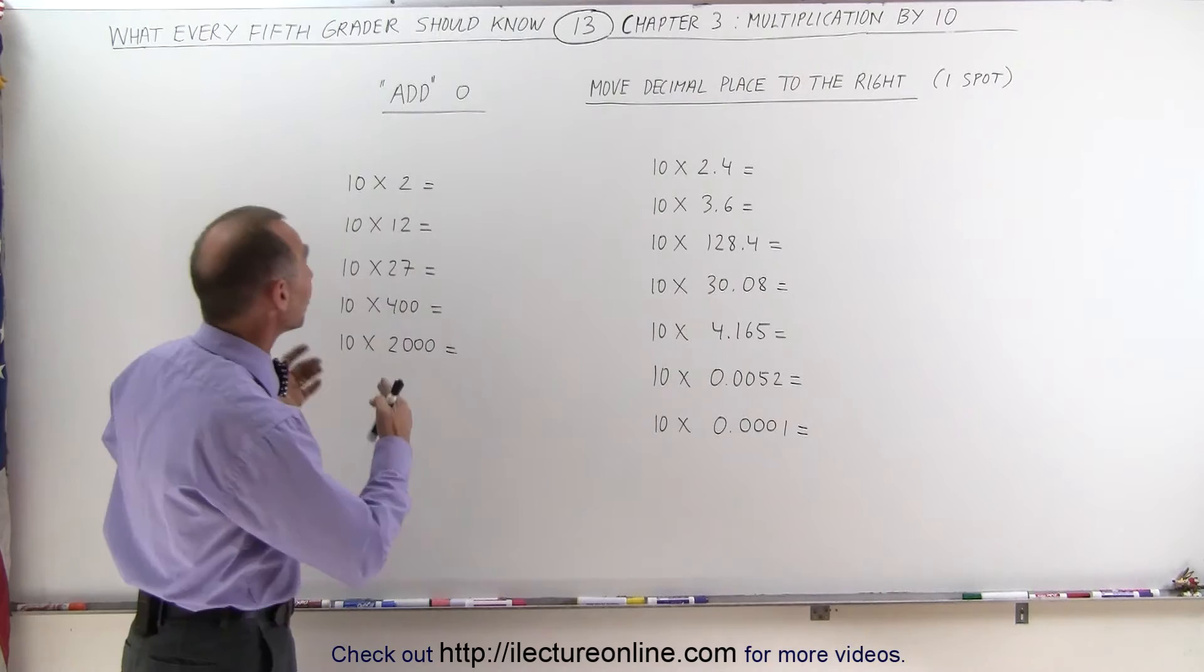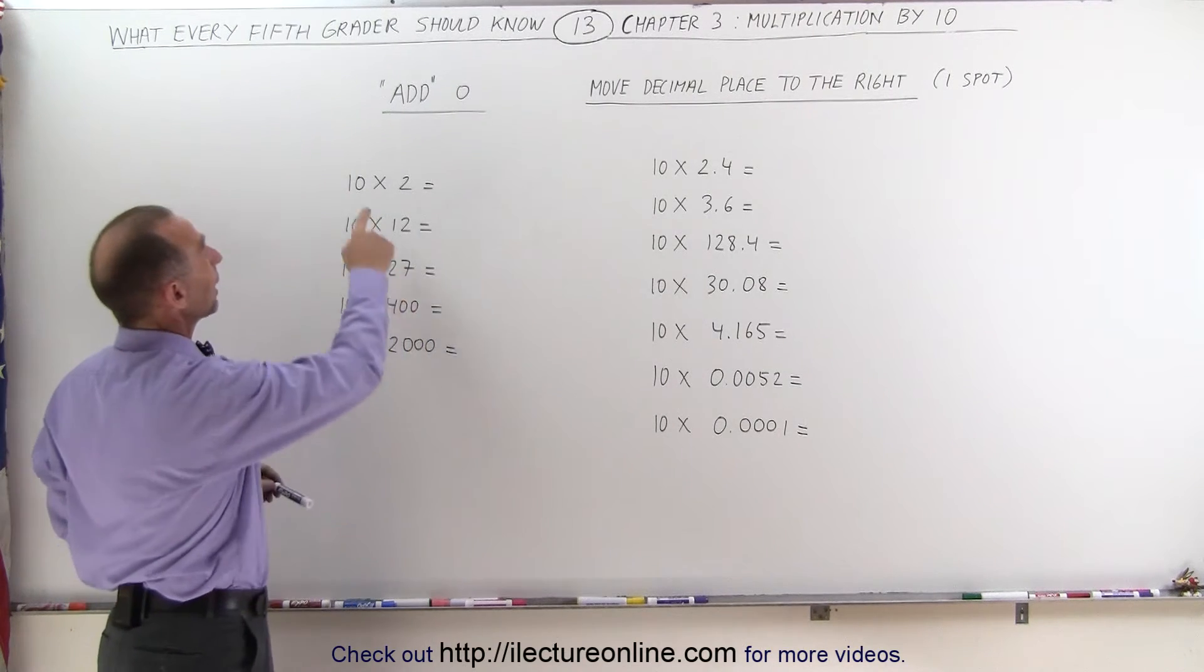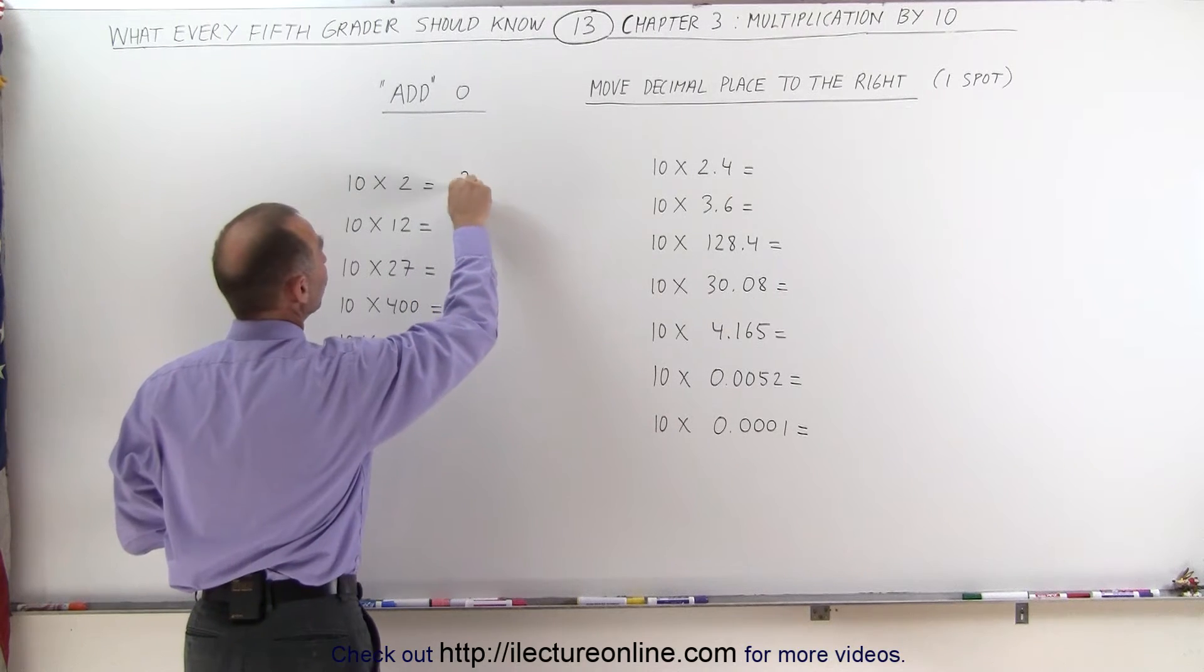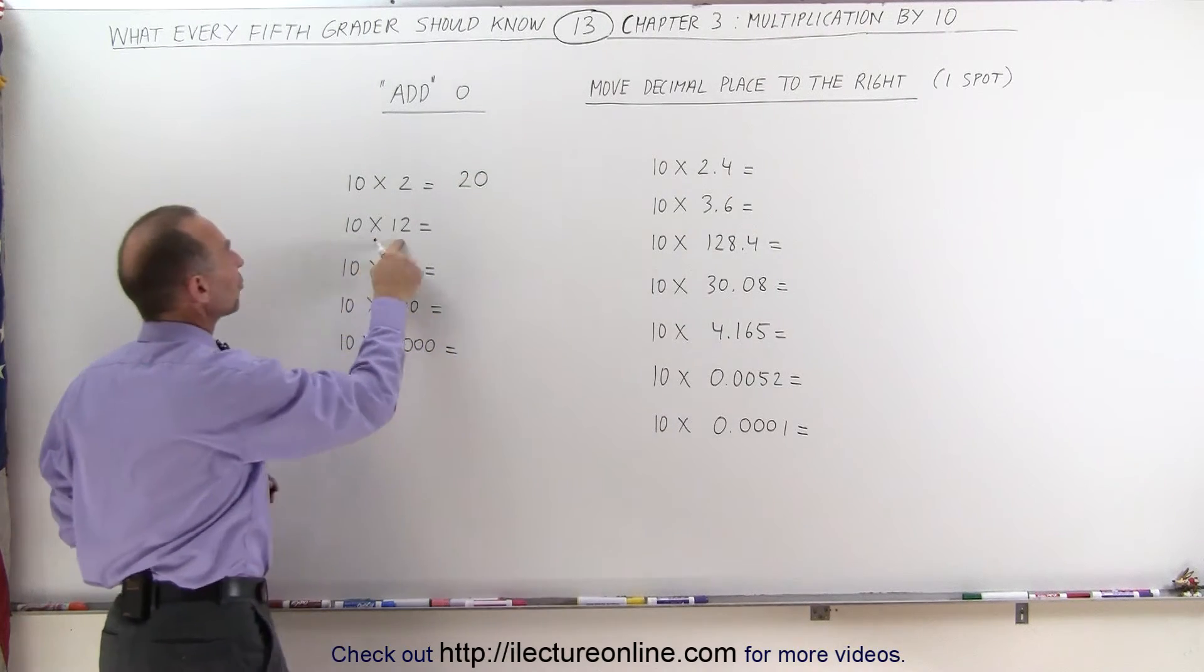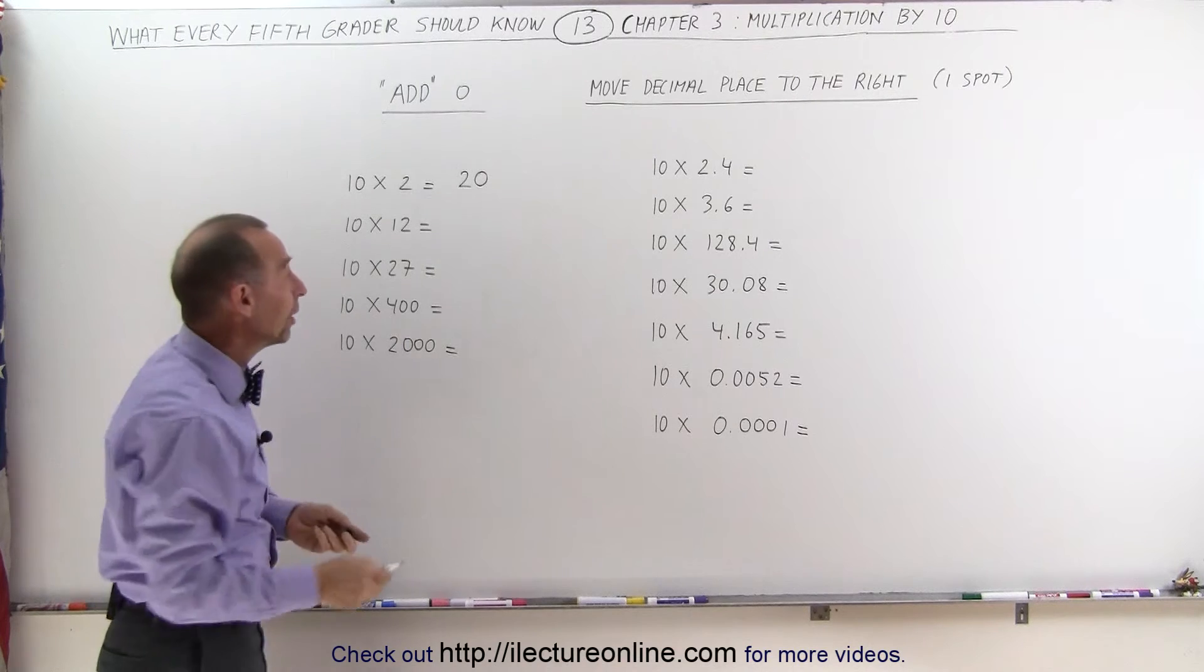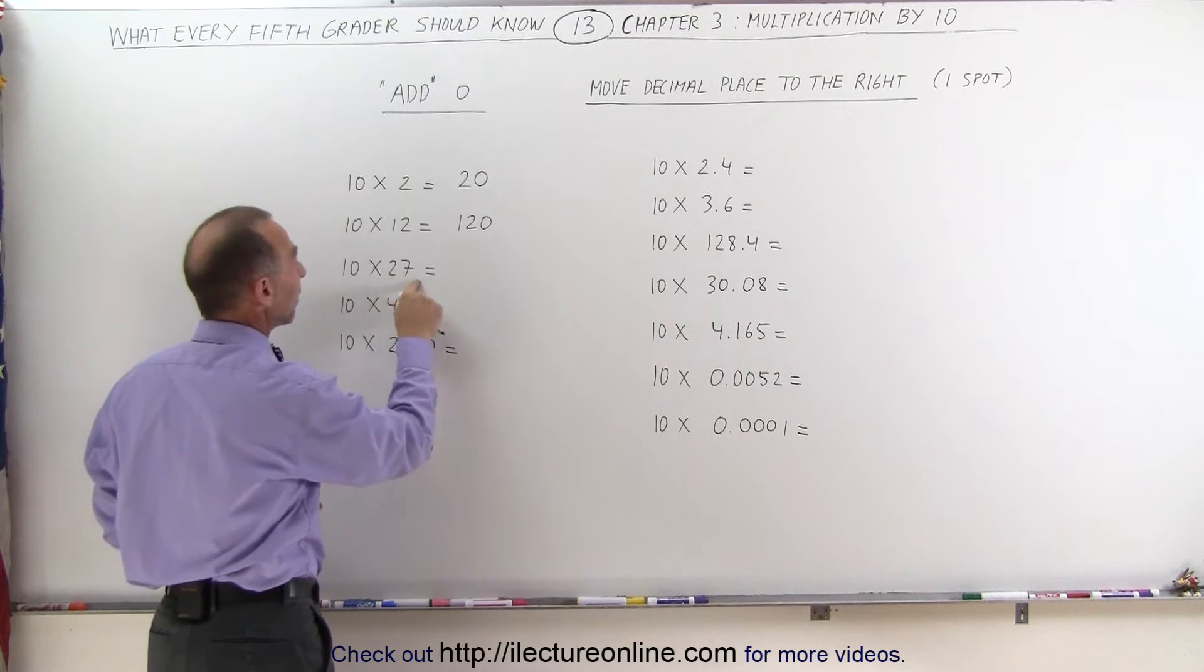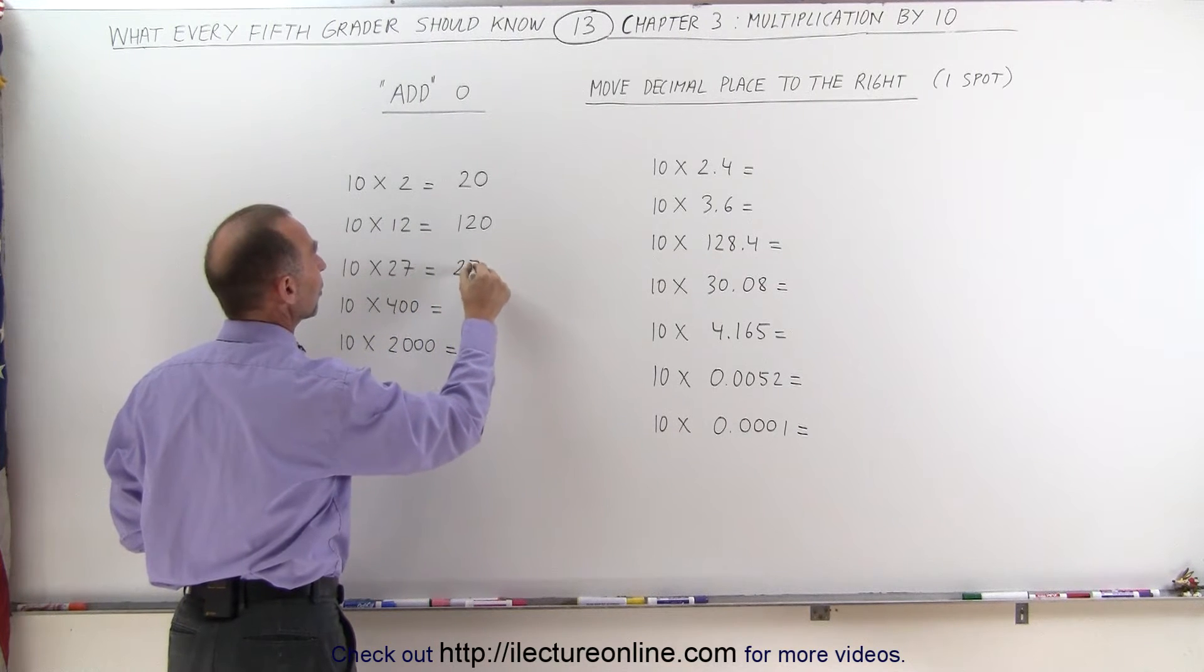Let's start with adding a 0 to the number. Here we're multiplying 10 times 2. Add a 0 to 2, we get 20. The answer is 20. 10 times 12, add a 0 to the 12, and you get 120. 10 times 27, add a 0 to the 27, you get 270.